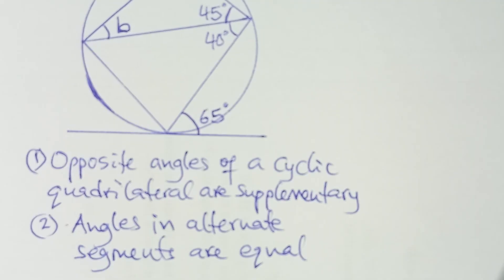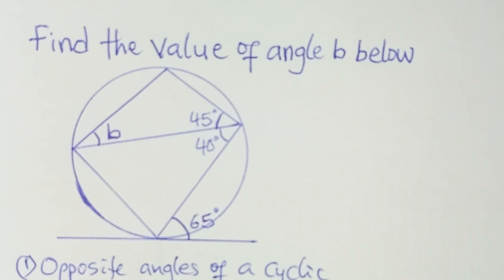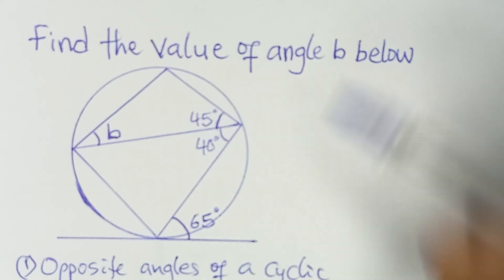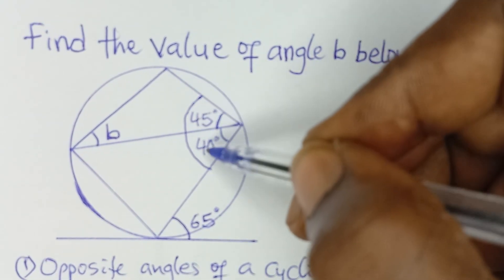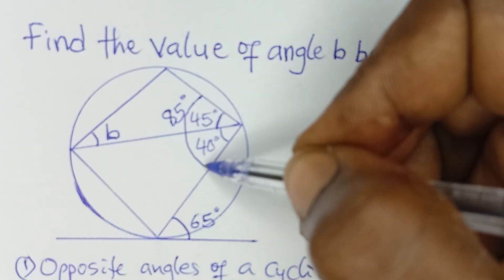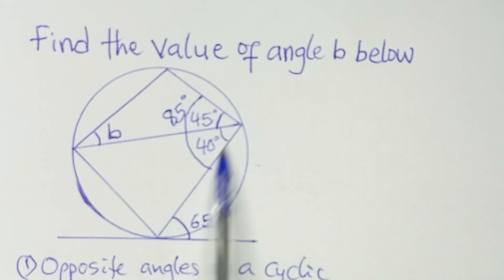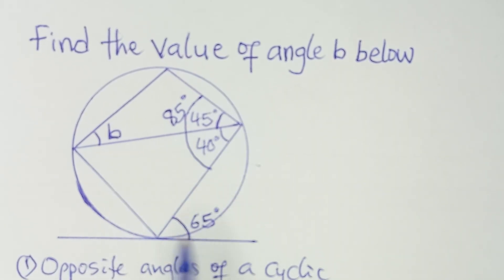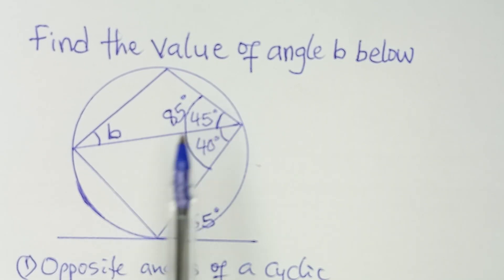Now let's go back to the diagram to see how we apply these two theorems. Looking at the diagram, the total angle here is 85 degrees — that is 45 plus 40, which gives us 85 degrees. In this cyclic quadrilateral, this angle and the total of this angle here are opposite angles. From theorem one, opposite angles of a cyclic quadrilateral are supplementary.